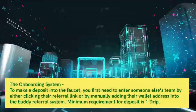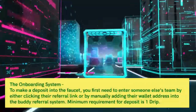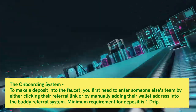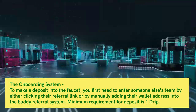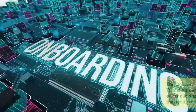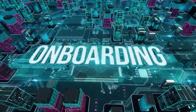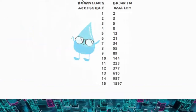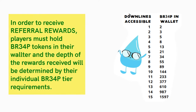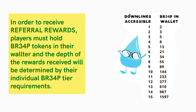To make a deposit into the faucet, you first need to enter someone else's team by either clicking their referral link or by manually adding their wallet address into the buddy referral system. The minimum requirement for deposit is one DRIP. In order to receive referral rewards, players must hold BR34P tokens in their wallet, and the depth of rewards received will be determined by their individual BR34P tier requirements.